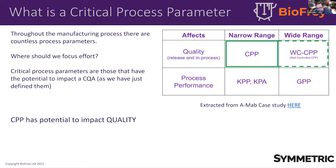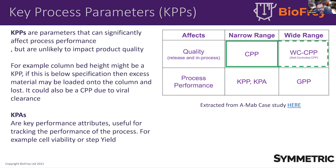The key distinction for me is about whether it's affecting quality — the attributes of the molecule, either in-process or during release — in which case it would be a critical process parameter, or whether it's affecting process performance, in which case it would become a KPP, a key process parameter. That distinction is quite important as you go through and classify each parameter.